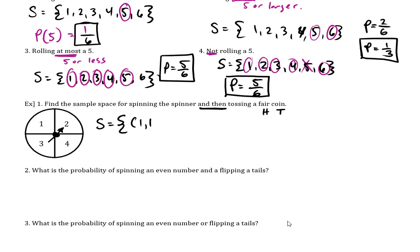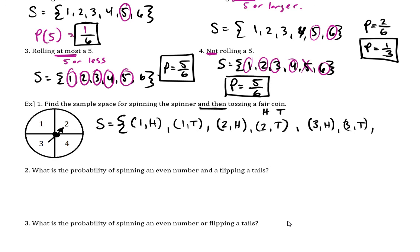I'll use ordered pairs and go through in a pattern. If it lands on one and I flip the coin, it lands on heads or tails — two outcomes. Then if it lands on two, it could be heads or tails — two more outcomes. Continuing: three-heads, three-tails, four-heads, four-tails. Counting them all: one, two, three, four, five, six, seven, eight different outcomes. So there are eight outcomes in the sample space, meaning eight should be our denominator.